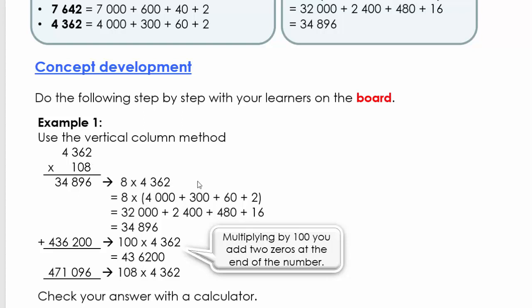But in this lesson we're going to do it so we understand where it's come from and understand certain techniques. So let's quickly see. We've got 4,362 times 108. What we're going to do is we're first going to take the 8.